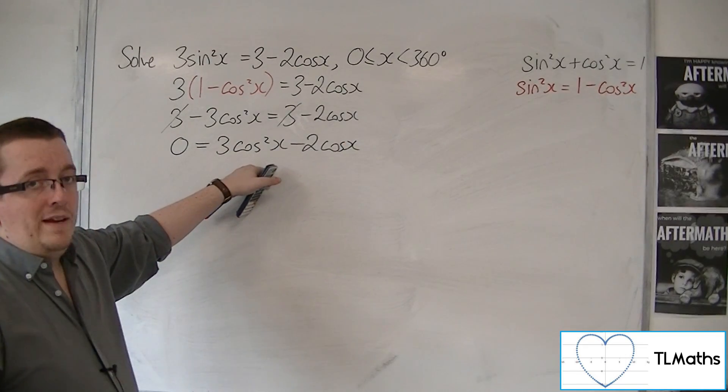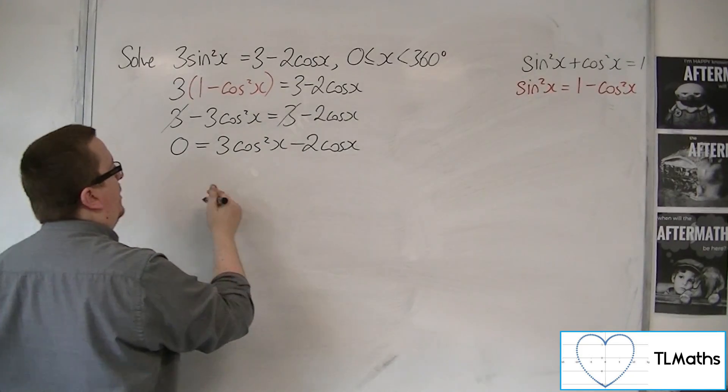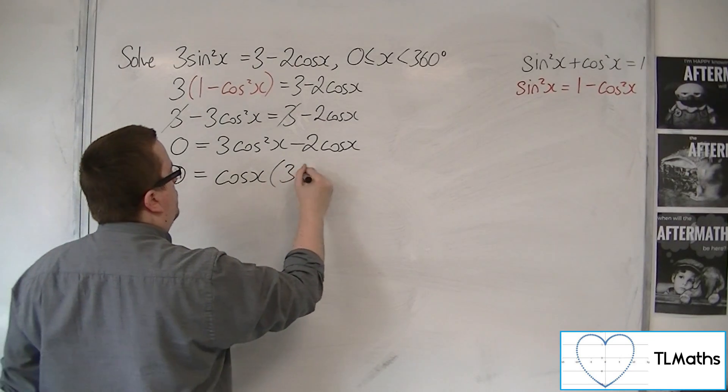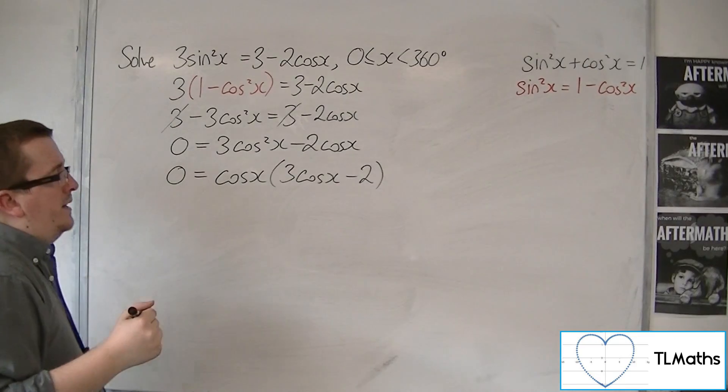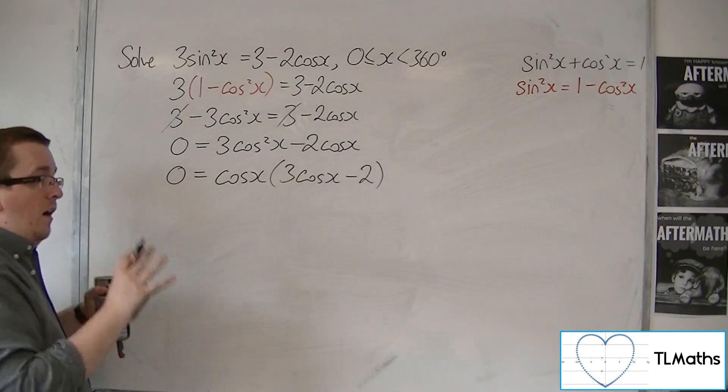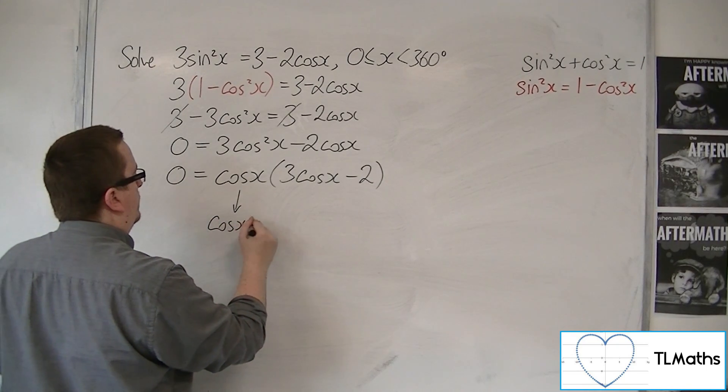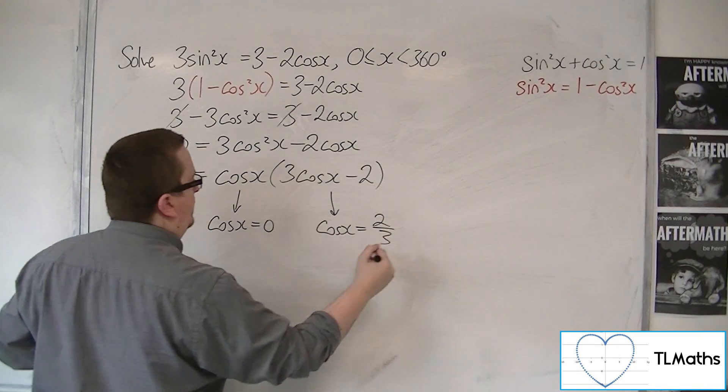That is a quadratic that I can factorise because I can pull the cosine x out of a single bracket, leaving me with 3 cos x minus 2 inside the bracket. So either cos x is 0 or cos x is equal to 2 thirds.